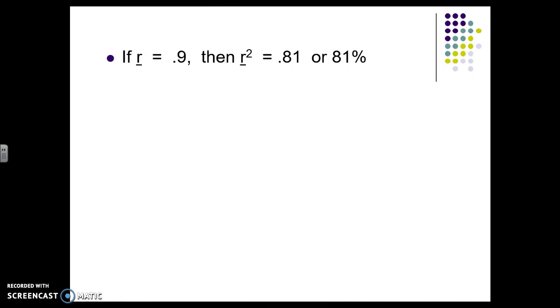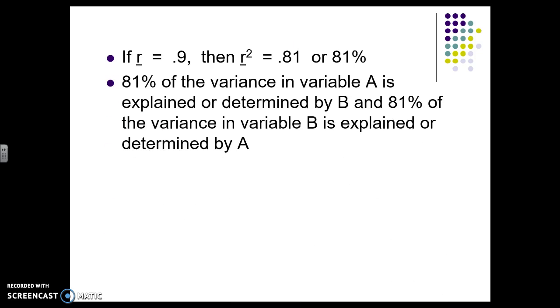And we talk about it as the percent of variance that is explained by the relationship of the other. For example, if I have an R of 0.9, then we know it's positive, and we know it's strong. But that's all we can say. The R squared, so taking the 0.9 and squaring it, is 0.81 or 81 percent, meaning 81 percent of the variance in A is explained or determined by B. You could also say it the other way. So 81 percent of the variance in B is explained by A.